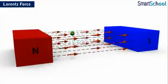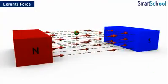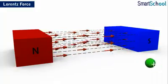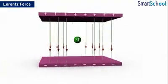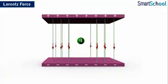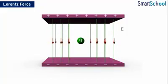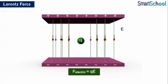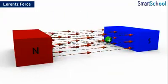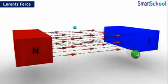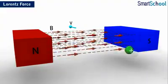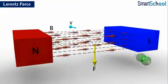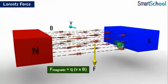Now let us learn about the forces acting on a moving charge in the presence of both an electric field and a magnetic field, which is called Lorentz force. Consider a charge of Q Coulombs placed in a uniform electric field of strength E. The force acting on the charge due to the electric field is F_electric = QE. Consider another charge of Q Coulombs moving with velocity V in magnetic field B. The force acting on the charge due to the magnetic field is F_magnetic = Q(V × B).